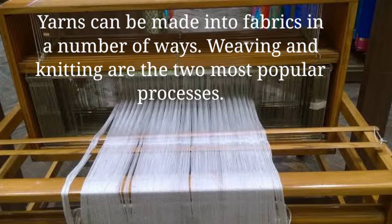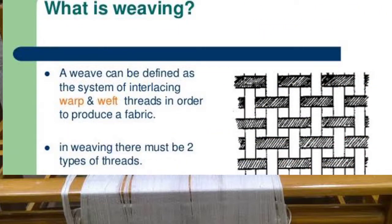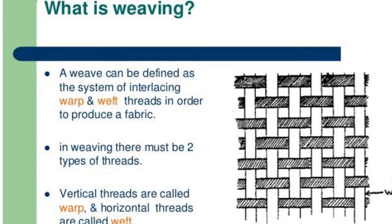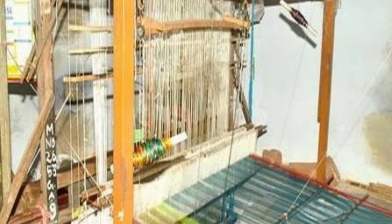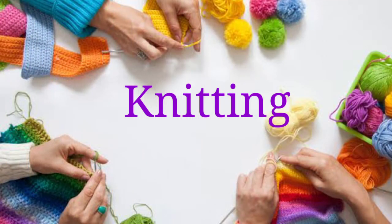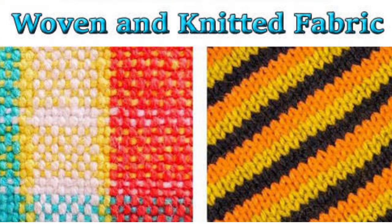Yarns can be made into fabric in a number of ways. Weaving and knitting are the two most popular processes. Weaving is the process of interlacing two sets of yarn at right angles to make a fabric. Knitting is the interloping of one or more sets of yarn. Knitted fabrics are more stretchable than woven fabrics and are used to make t-shirts, sports pants, and socks. Knitting can be done by hand as well as by machines. Thank you for watching.